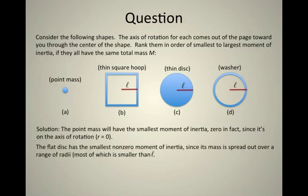The next will be the flat disk. Although it's equal in size to the washer, its mass is spread throughout the disk. And so if we think of dividing up that disk into lots of little chunks of mass, some of them are at smaller radii from the center of the disk than this total distance curly L.